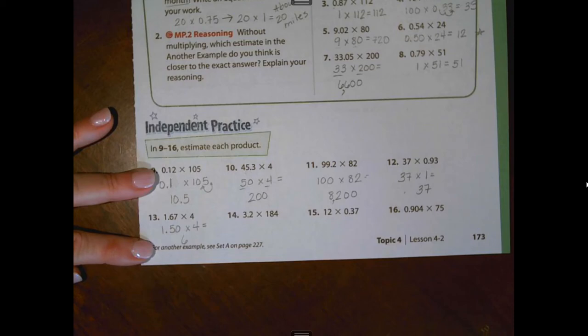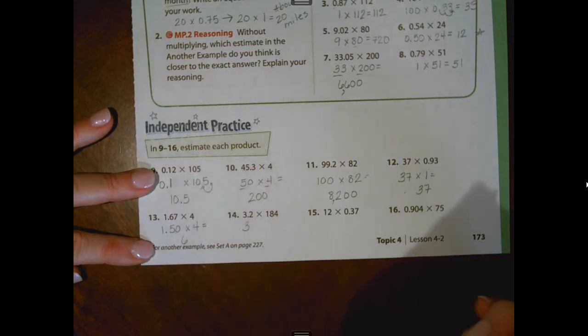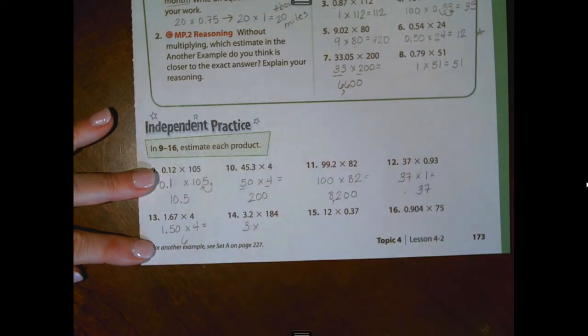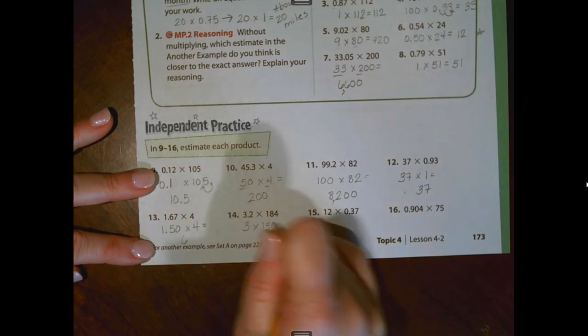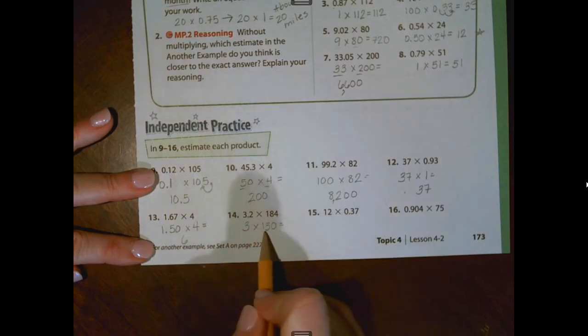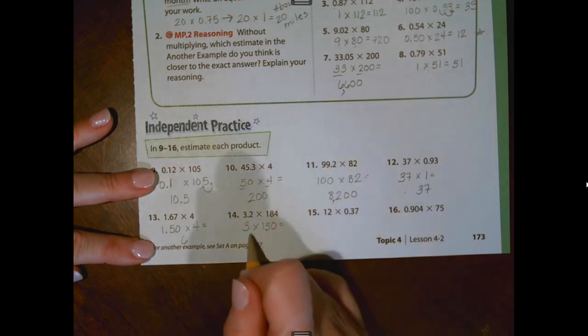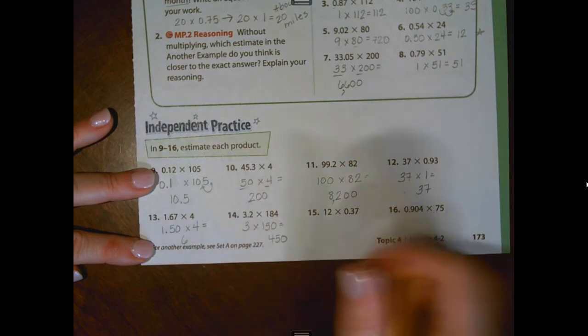Our next one, I'm going to use whole numbers for this decimal. So I'm going to round it to three. I am actually going to use a compatible number of 150. I'm pretty good with counting by 15s. So if I know that three times 15 is 45, then I know three times 150 would be 450.